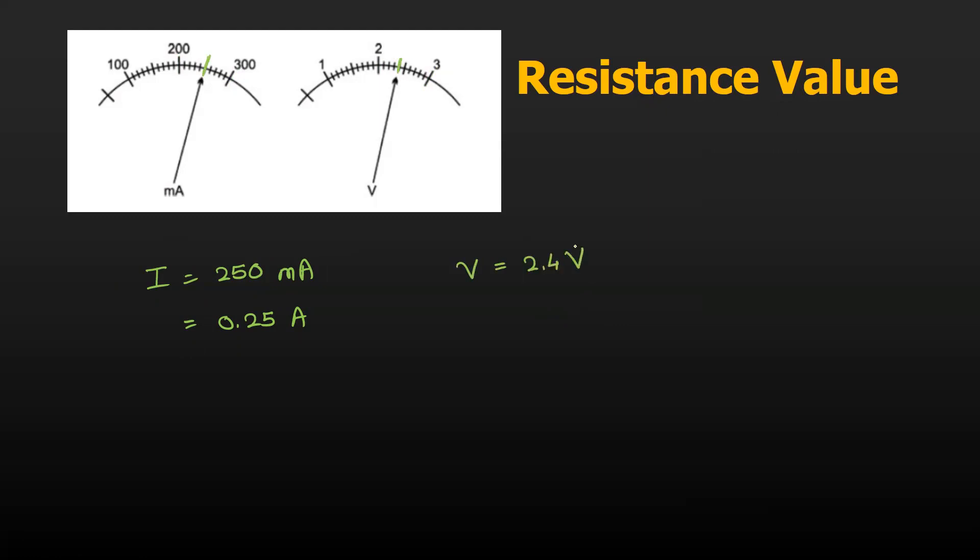Do you remember Ohm's law? Ohm's law says that resistance is equal to voltage divided by current. The voltage is 2.4 volts divided by 0.25 amperes, which comes out to be 9.6 ohms. So this is the resistance value. That's it for today. Bye bye, take care.